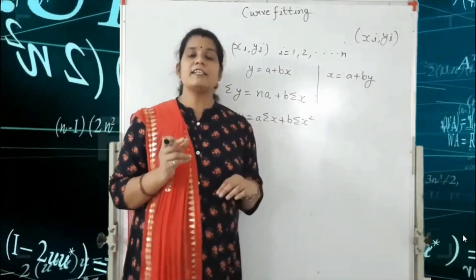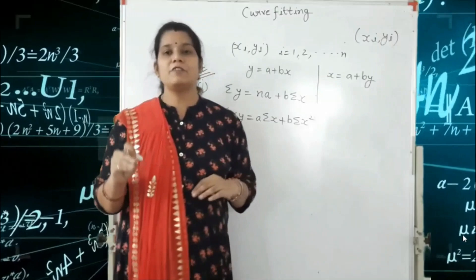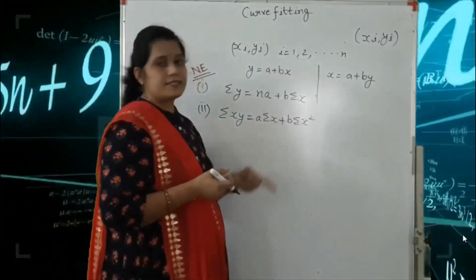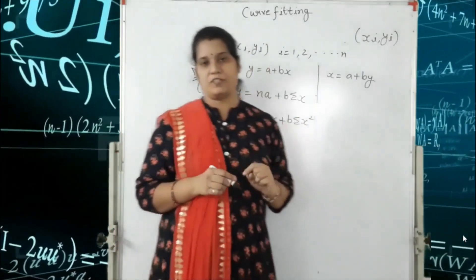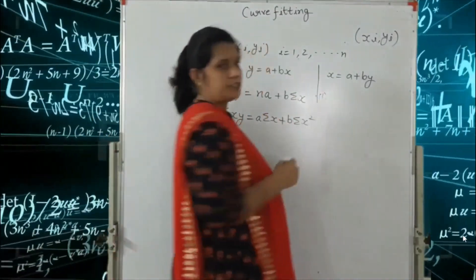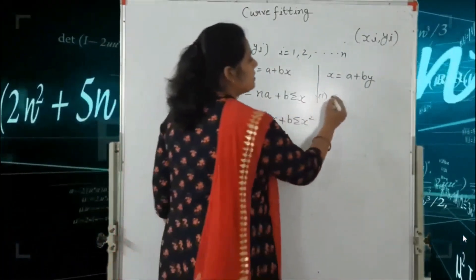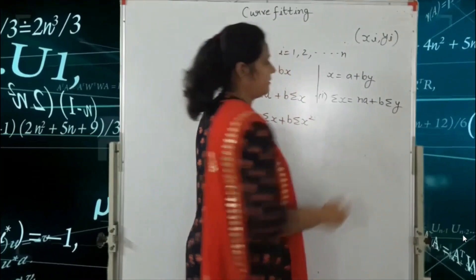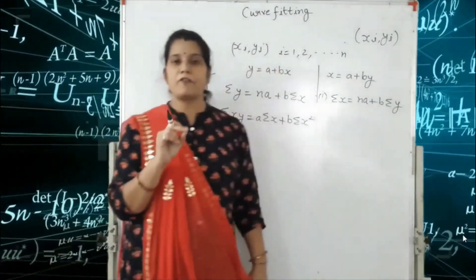We have already seen in middle school how to solve two equations — like X plus Y equal to 4, X plus BY equal to 5 — and find the values of X and Y. Similarly, here we find all these summation values and then solve for the two values A and B. If we are given the equation X is equal to A plus BY, the first normal equation is: summation X is equal to nA plus B summation Y.